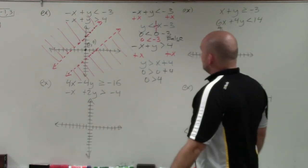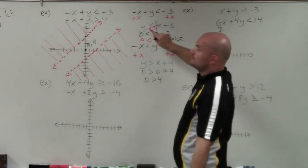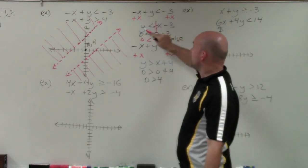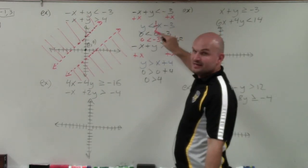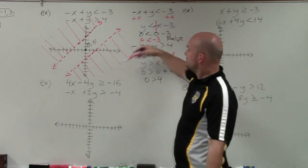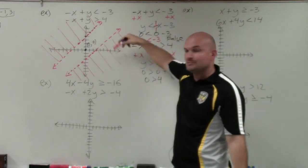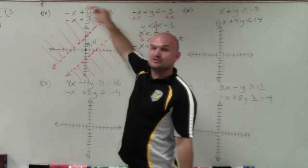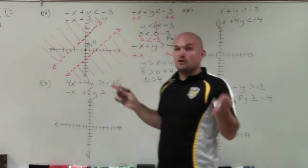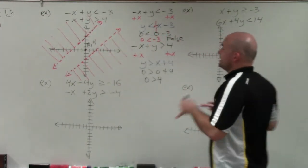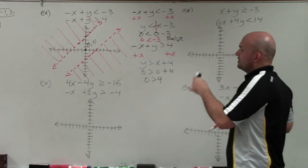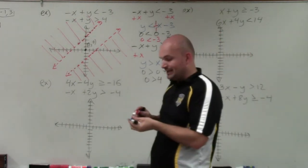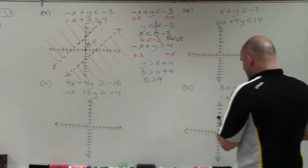What's also important is noticing the inequality once solved for y. Since y is less than the equation, I shade below it. Since y is greater than, I shade above. Remember, this shortcut only works when y is on the left-hand side and isolated.